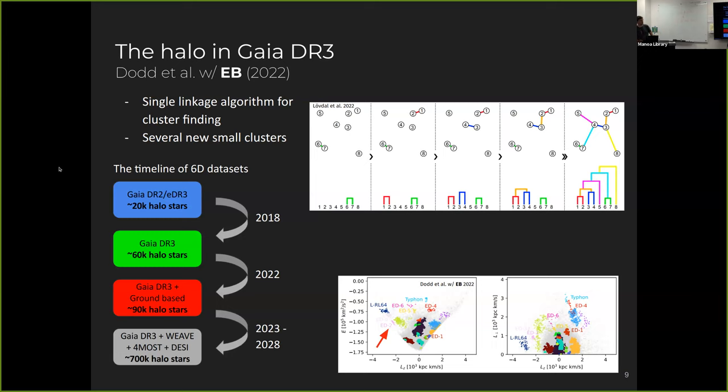But then in 2022, with Gaia year three, we got 60,000. And if we combine with ground-based surveys, like I mentioned before, we had 90,000 stars. So the results I'm going to talk to you from this point on is with these 90,000 stars. And just to give you a hint of what might happen in the next five to 10 years, when WEAVE, 4MOST, DESI release their data, we will have about a million stars to play this game.